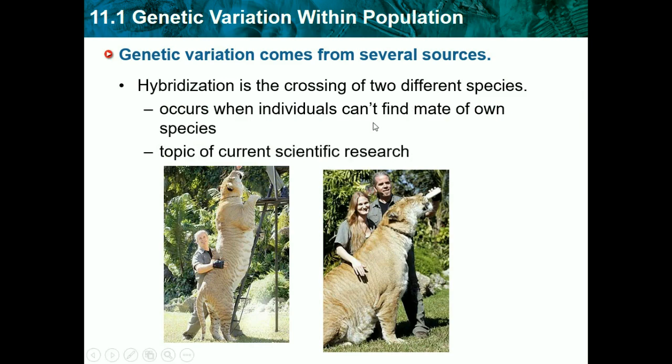Hybridization is a topic of current scientific research and is a relatively new phenomenon. We do it in plants all the time — crossbreeding plants to grow two different fruits. Here it appears to show a tiger that bred with another large animal.